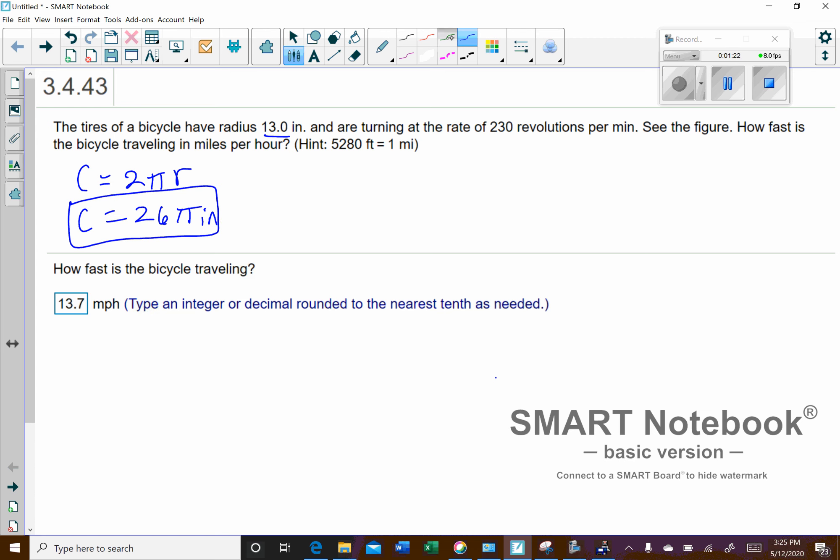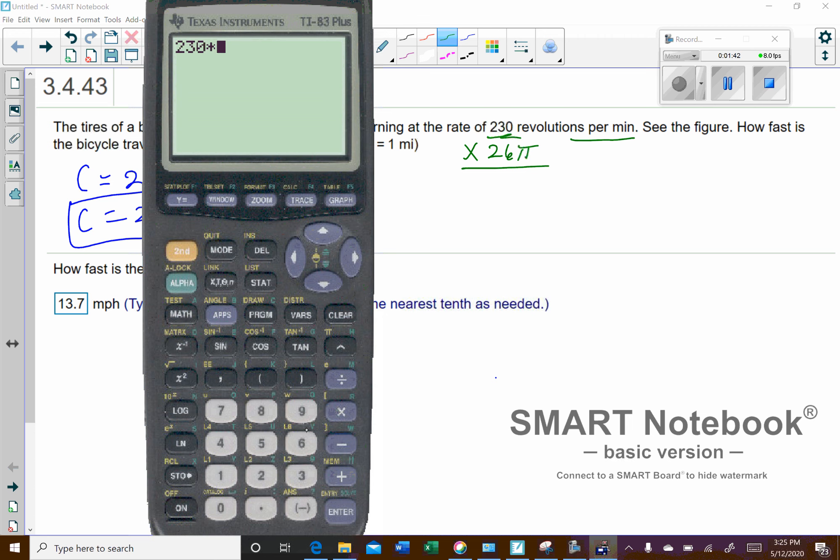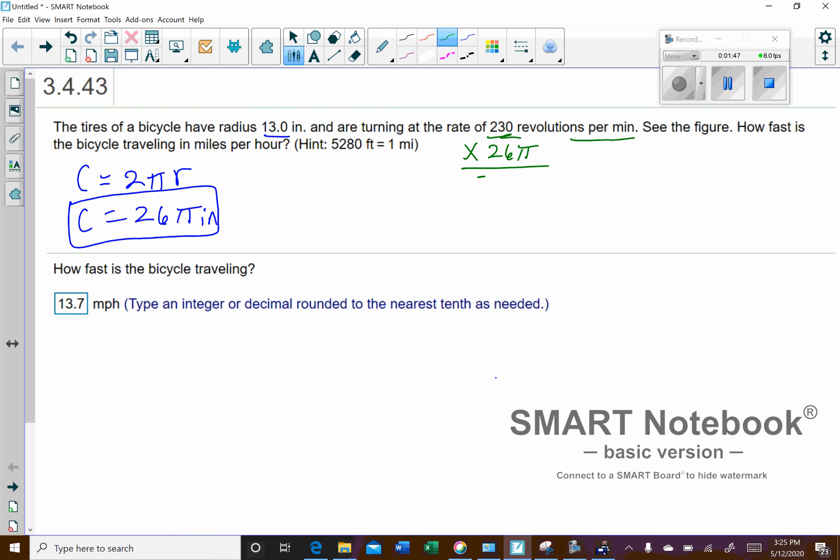So let's go ahead and figure out the distance in inches per minute. So if we're doing 230 revolutions per minute, every revolution we're going 26π. So what we're going to do is multiply that by 26π. So let me get my calculator. 230 times 26 is going to be 5,980. So 5,980π inches per minute—that's how many inches we're traveling per minute.